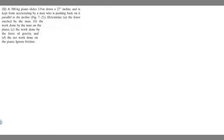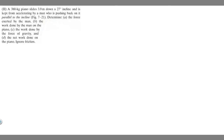In this problem, a 380 kilogram piano slides 3.9 meters down a 27-degree incline and is kept from accelerating by a man who is pushing back on it parallel to the incline. We need to determine: (a) the force exerted by the man, (b) the work done by the man on the piano, (c) the work done by the force of gravity, and (d) the net work done on the piano. We're told to ignore friction.